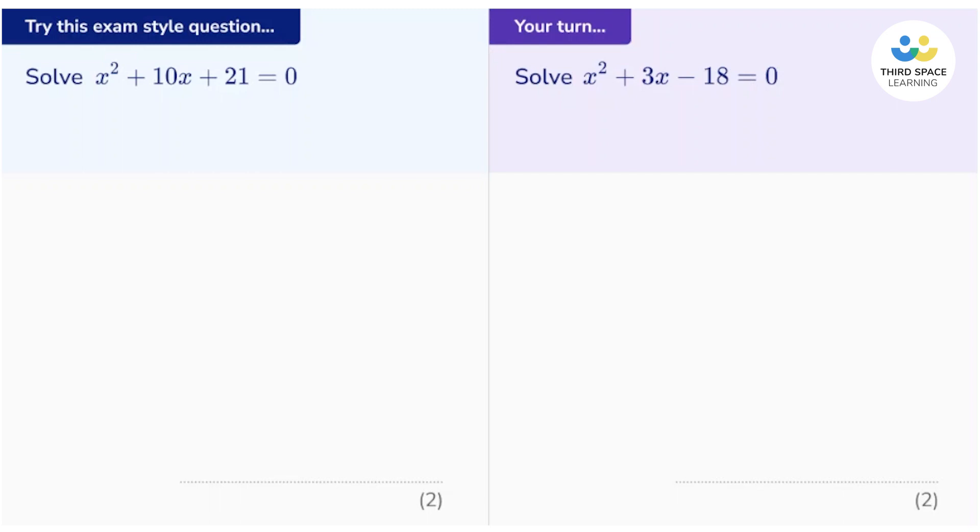Let's start with this question. It says solve x squared plus 10x plus 21 equals 0. And we're going to solve it by factorising. So we need two numbers that will add to give this number here, the plus 10, and multiply to give this number, the plus 21.